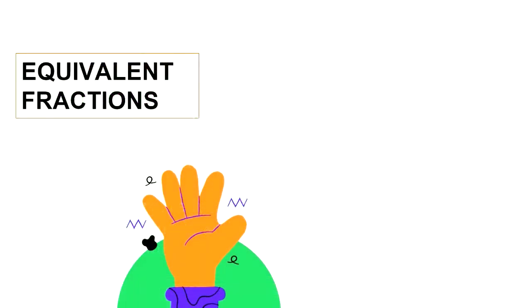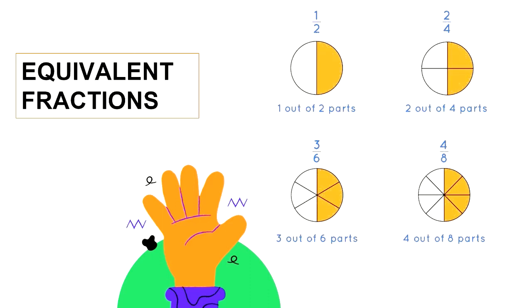Now, let us move on to equivalent fractions. Equivalent fractions are two or more fractions that are all equal. A fraction is a part of a whole. The denominator represents how many equal parts the whole is split into, and the numerator represents the amount of those parts.